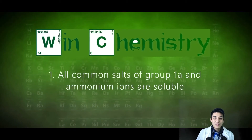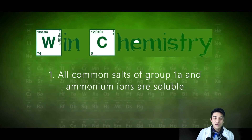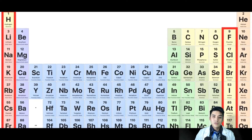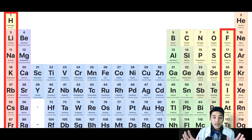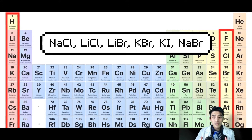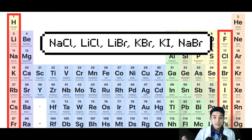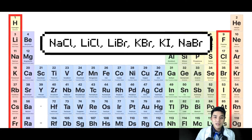Rule one: all common salts of Group 1A and ammonium ions are soluble. So you've got alkali metals and halogens, and any combination from those two families will dissolve in water. I listed a few examples — any CLs on that list?